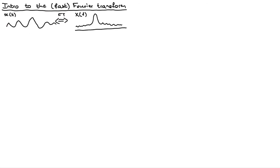Now, the signal I drew here — when we want to process it with a computer, we can't actually input it directly. What our microphones are going to do is sample that signal, which basically means we're only keeping little snapshots of the signal as we go across. What we keep is only these little snapshots along the way, and we call them samples. Normally we keep samples every few milliseconds, and the time between two consecutive samples is called the period — it's one over what we call the sampling frequency.